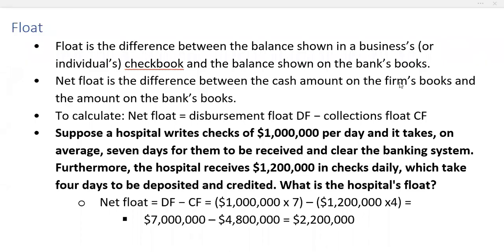In this video we will calculate float. Float is the difference between the balance shown in a business or an individual's checkbook and the balance shown on the bank's books. So net float is the difference between the cash amount on the firm's books and the amount on the bank's books.